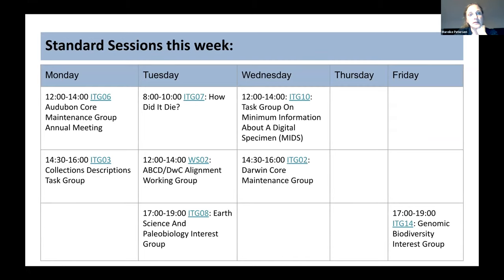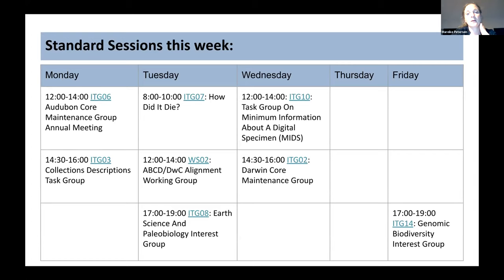Here are the sessions of importance during this week if you're interested in data standards. The Monday sessions have already taken place but are recorded, so check the website for recordings in the upcoming days. Tomorrow there are three: a Darwin Core extension session, a meeting on alignment of ABCD and Darwin Core, and the Paleo Science and Paleobiology Interest Group session where Darwin Core and the ABCD extension EFG is important. On Wednesday we have the Minimum Information About a Digital Specimen and Darwin Core Maintenance Group sessions, and on Friday the Genomic Biodiversity Interest Group — GGBN and beyond.